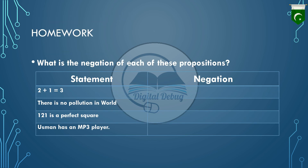Time for homework. You are given propositions and you are supposed to negate them. Your statements are: '2 plus 1 equals 3,' 'There is no pollution in the world,' '121 is a perfect square,' and 'Usman has an MP3 player.' That's all for today. Thanks for watching.